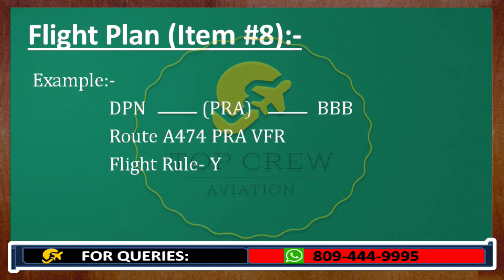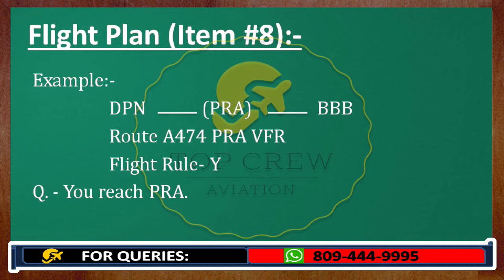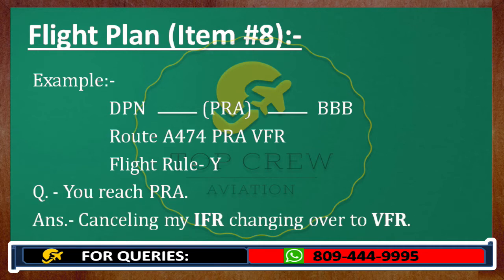The question would be: you reach Pratapgarh and make a call to the ATC. The answer would be — when you see this question, you reach Pratapgarh, and it was mentioned in the route as Alpha 474, Pratapgarh VFR. The answer, how we would be transmitting back to the ATC: cancelling my IFR, changing over to VFR.